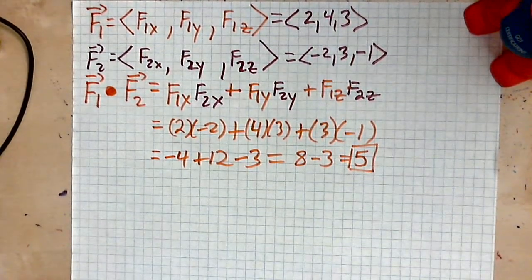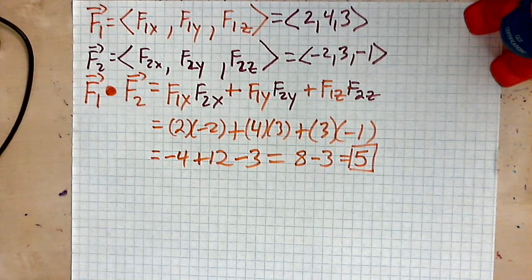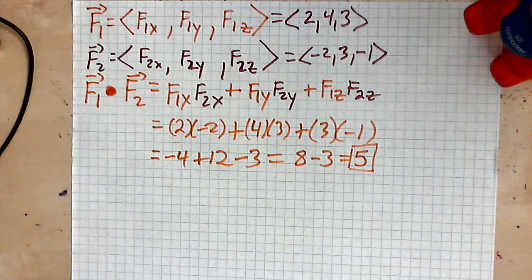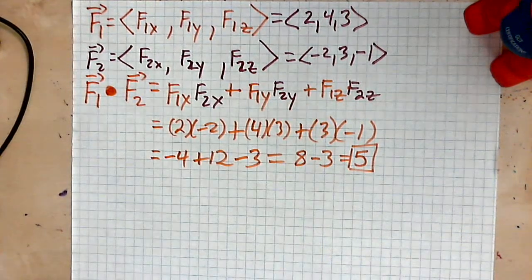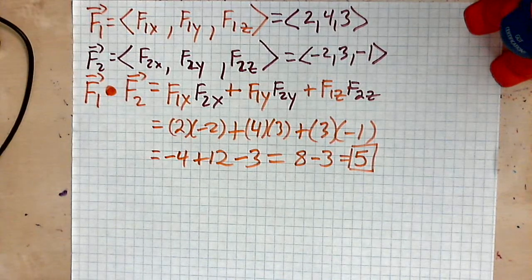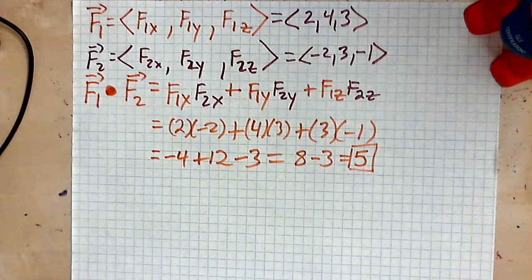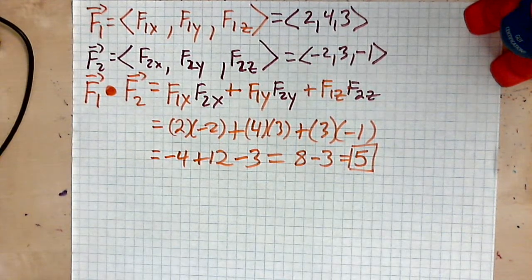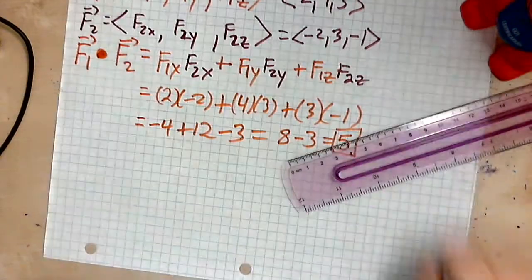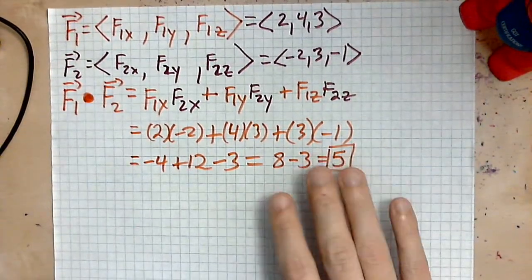So this is in the case of two three-dimensional vectors, right? Each one has one, two, three components. There are two of them. So you apply the definition of the dot product as you see it here. Simply multiply the corresponding components together, add everything at the end and that's it. And there is the number that is known as the dot product.